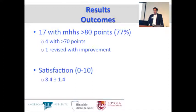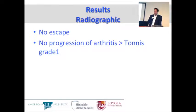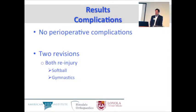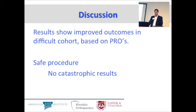We had 17 patients with a modified Harris Hip Score greater than 80, and another four with greater than 70. One patient was revised and subsequently had improvement after revision. Average patient satisfaction was 8.4 out of 10. Overall, very favorable results with this technique. Radiographically, there was no migration or escape of any femoral head and no progression of arthritis greater than Tönnis grade 1 within the study period. No major operative complications. Two revisions, both due to re-injury in sport. These results show improved outcomes in a difficult cohort, based on patient-reported outcomes, and the procedure was shown to be safe with no catastrophic results. It is, however, a technically challenging procedure that should not be underestimated.